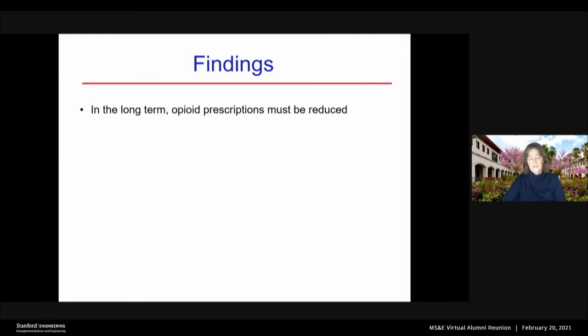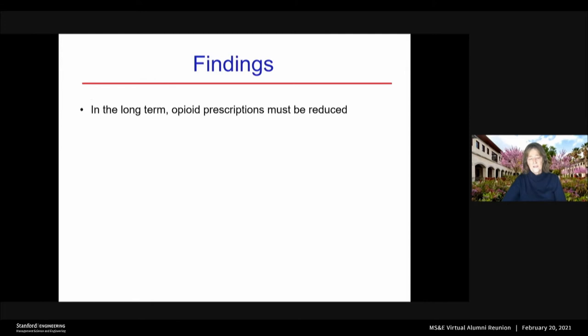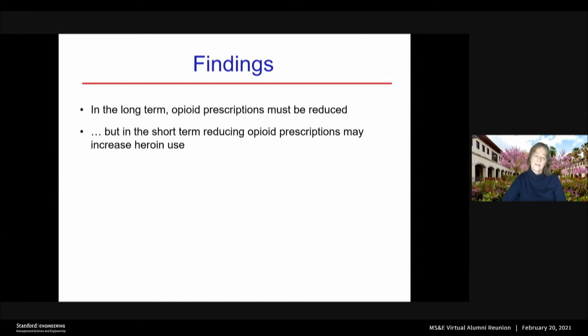Her study had four main findings. First, in the long term, if we're going to mitigate the US opioid epidemic, opioid prescriptions must be reduced. But what we found interestingly is that in the short term, reducing opioid prescriptions may lead to increased heroin use. The reason is when people cannot get diverted opioid pills and they're addicted, they may well turn to heroin, which is pretty easy to get.